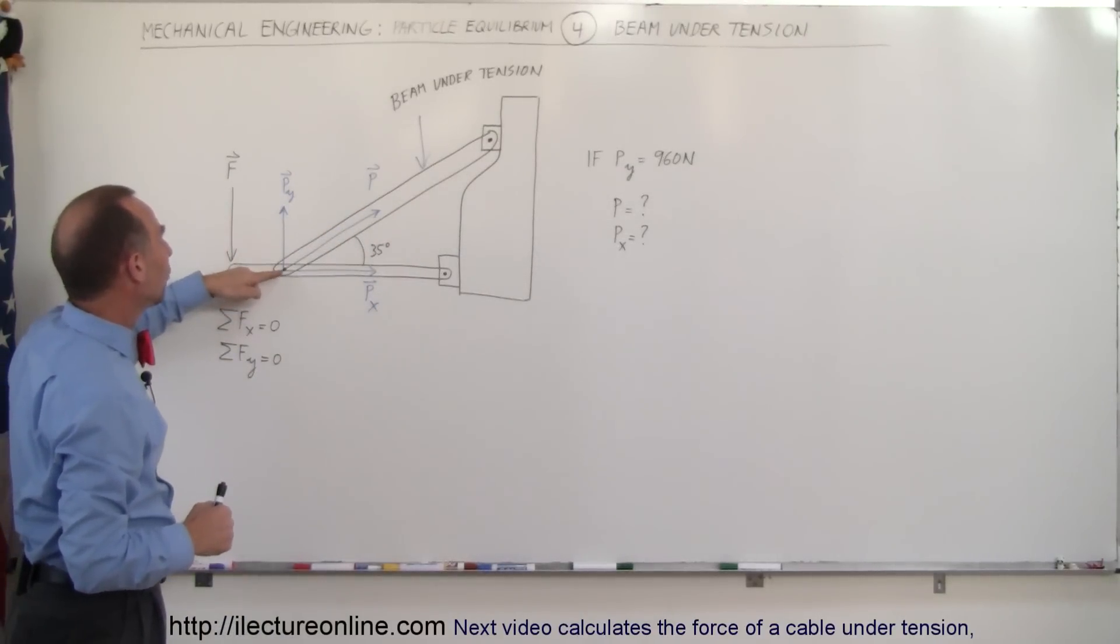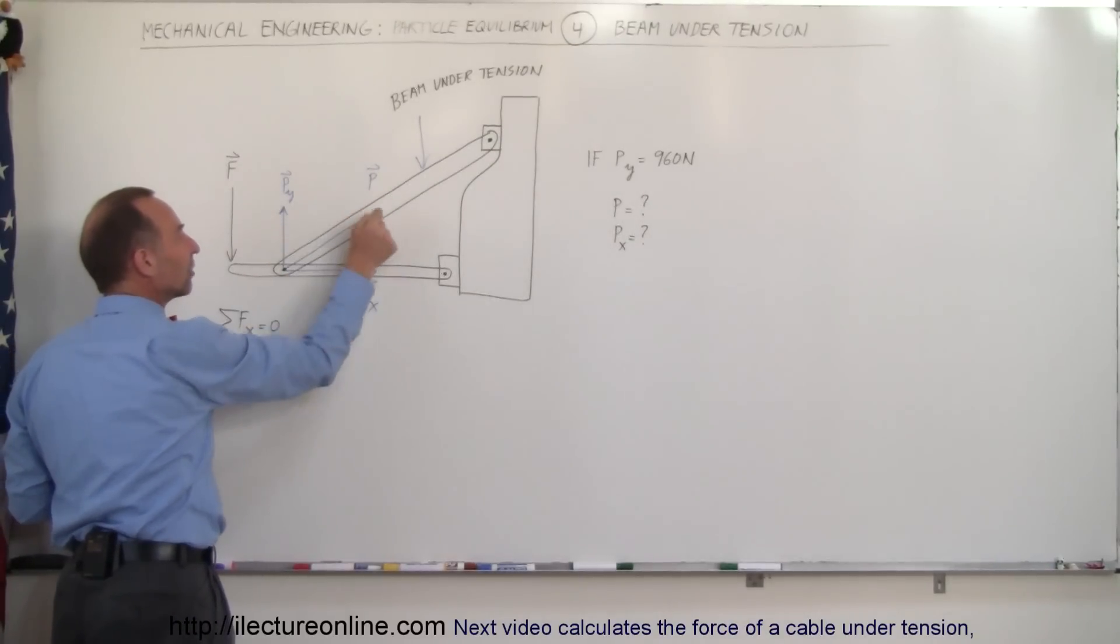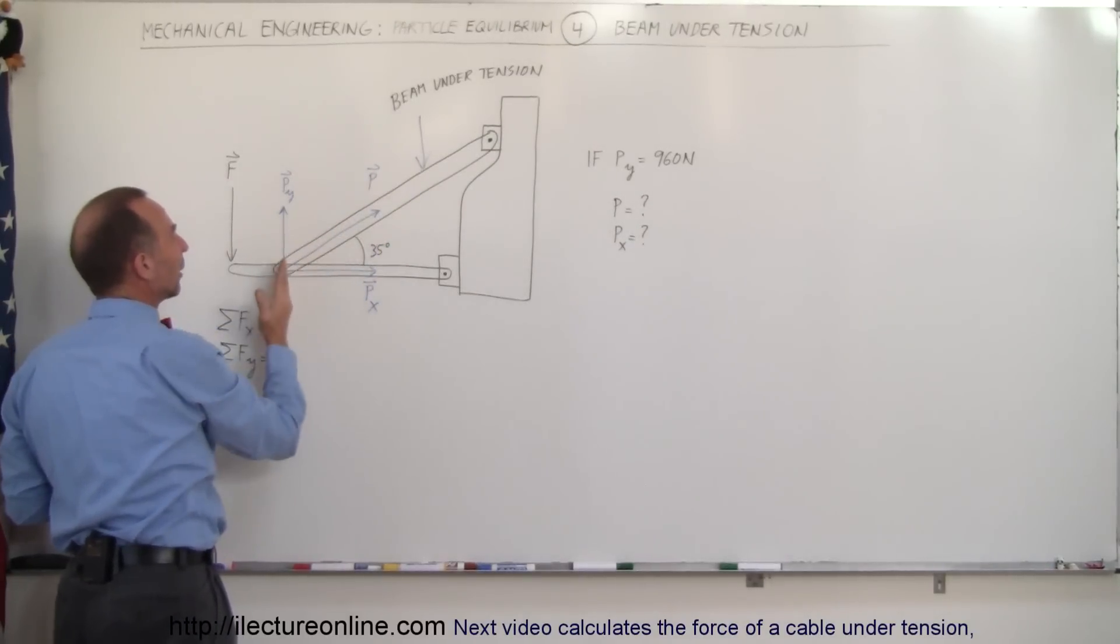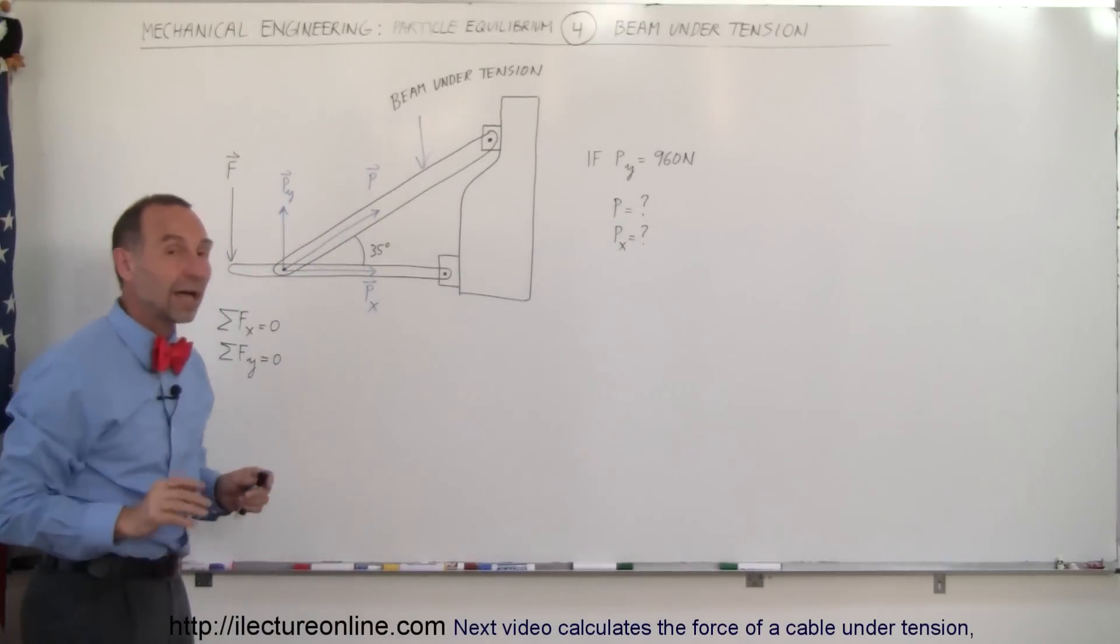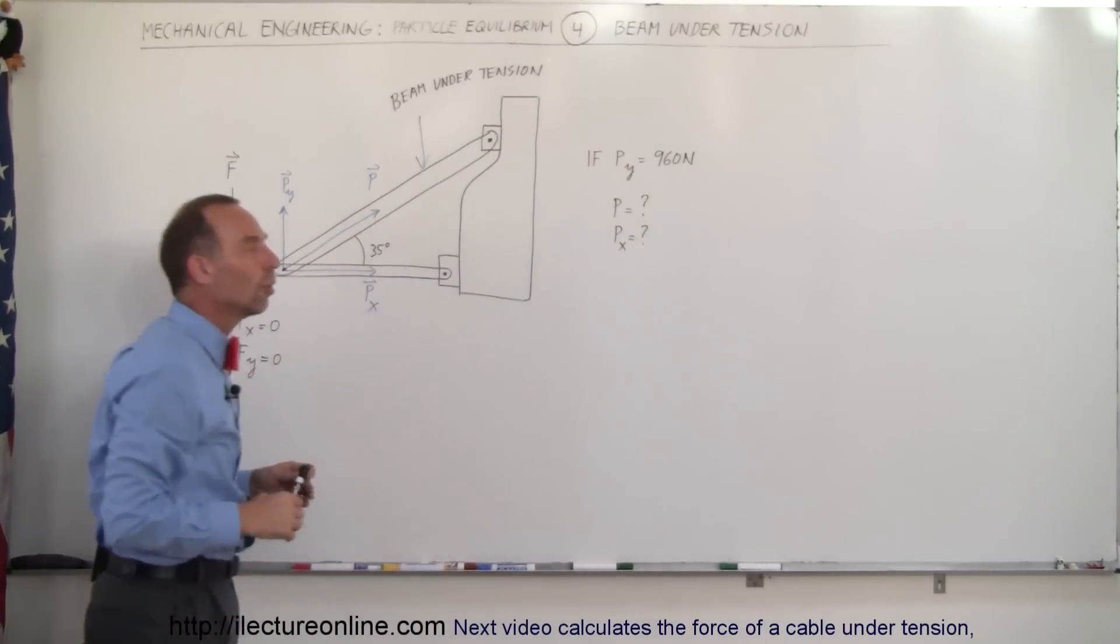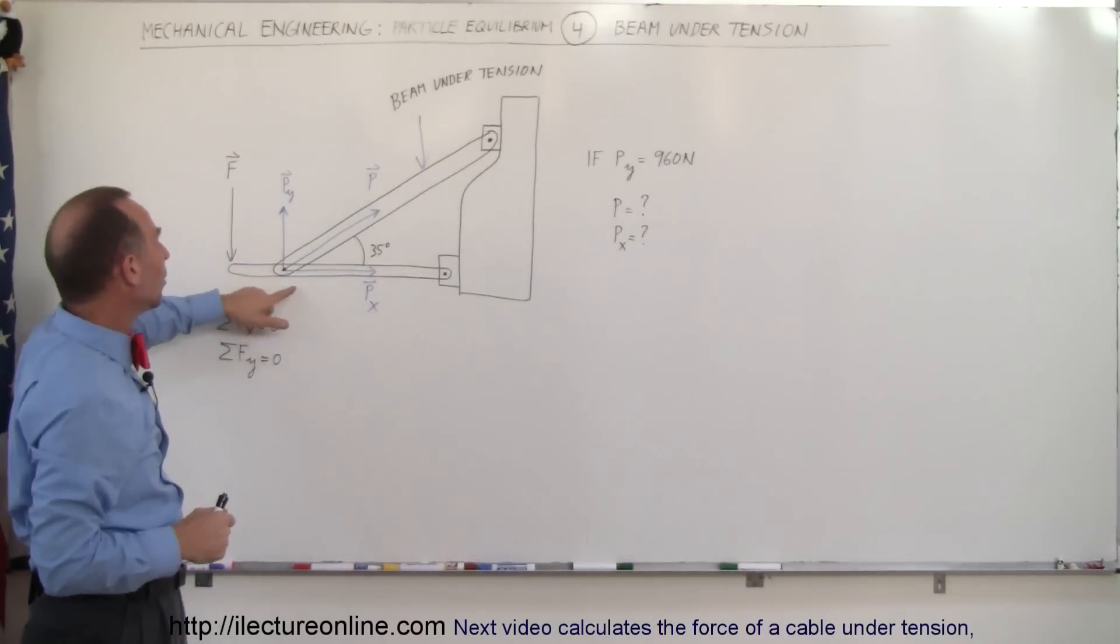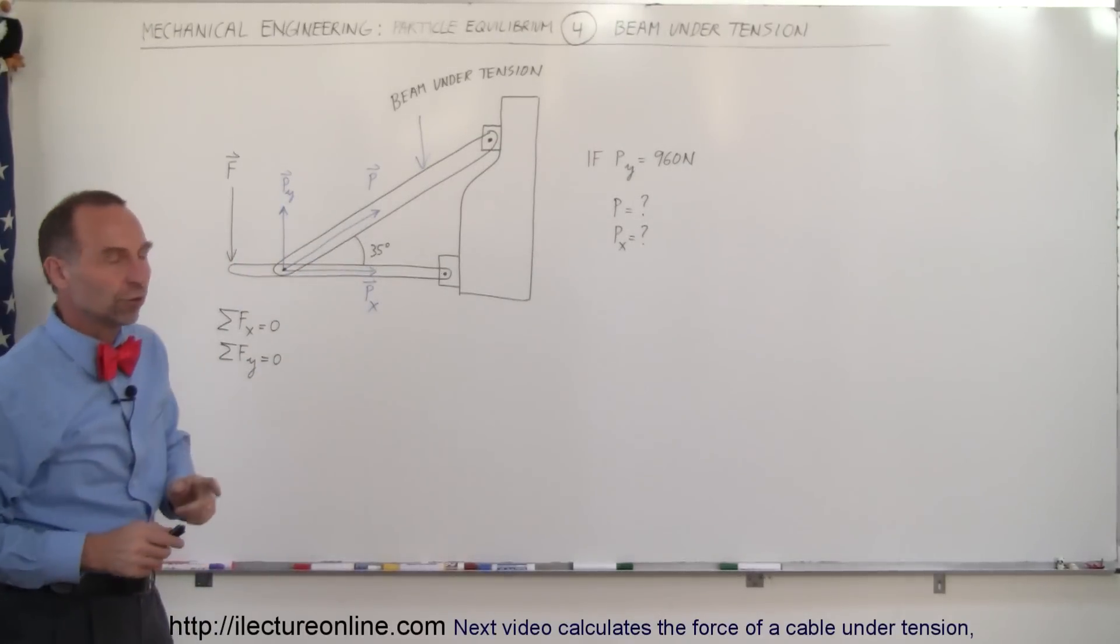We can say that there is a force pulling on this connection right here in this direction. That force will be equal to P, that will have a vertical component and a horizontal component. If we assume that the vertical component has a magnitude of 960 newtons, what will be the force on the beam, the force of tension, and what will be the x component of the force?